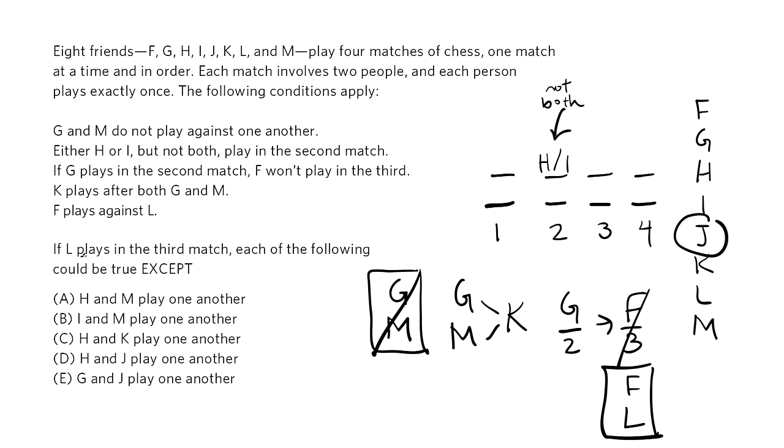Notice, the question stem gives us new information in the form of a condition. Every time a question gives you new information, you should expect that you'll be able to make inferences off of it, and that these inferences will be what lead you to getting to the right answer. Here we're told that L plays in the third match. Looking at the rules, we can see that this also means F must play in the third match.